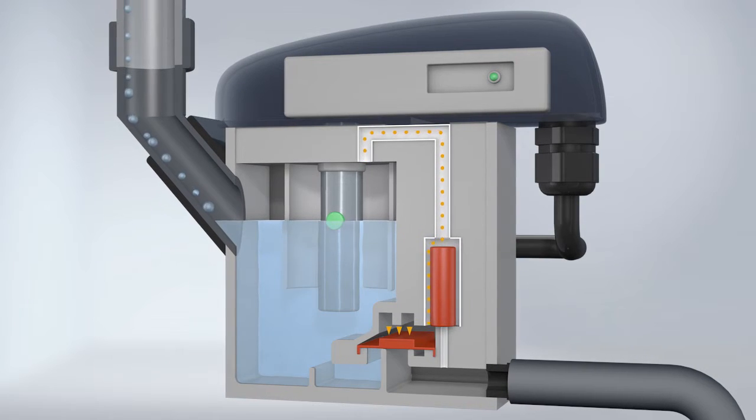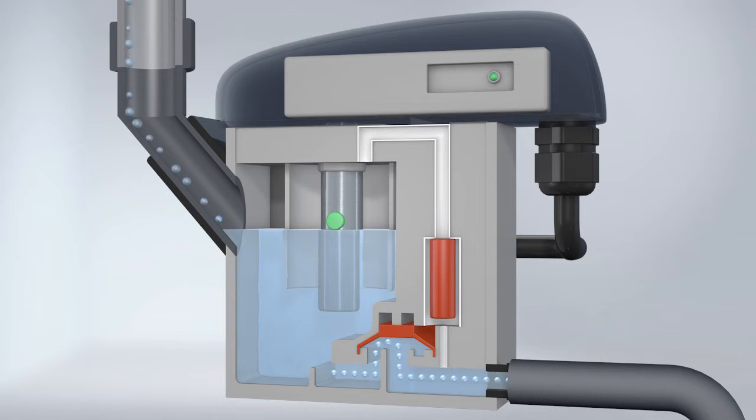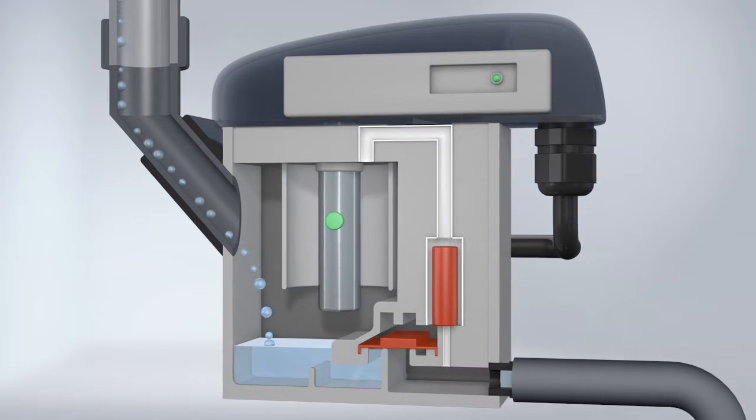When the zero-loss drain is full, the solenoid valve is activated and the space above the membrane is vented. Simultaneously, the pressure on the underside increases, allowing the condensate to flow into the outlet line.